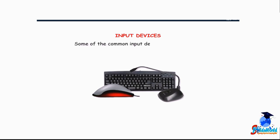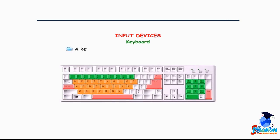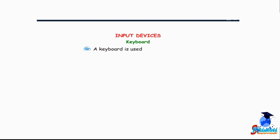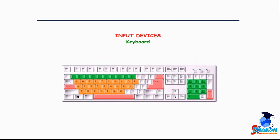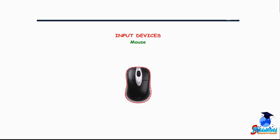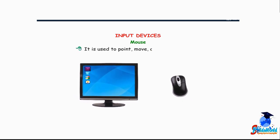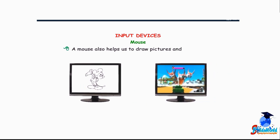Let us first talk about input devices — the devices used to enter data into a computer. Some common input devices are: Keyboard — a keyboard has many buttons called keys, used for typing letters, words, numbers and special symbols. A standard keyboard has 104 keys. Mouse — a computer mouse has two buttons. It is used to point, move and select any item on the screen. A mouse also helps us to draw pictures and play games.